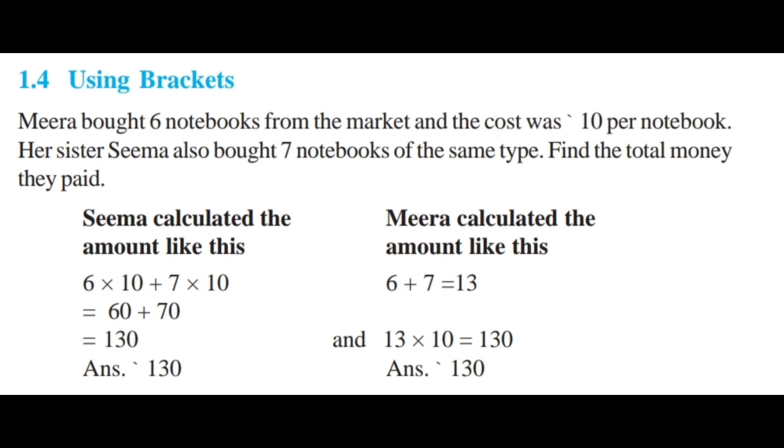Seema calculated the amount like this: 6 times 10 plus 7 times 10. So six tens is 60 plus seven tens is 70, which equals 130. Meera calculated the amount like this: 6 plus 7 equals 13. Thirteen books each cost 10 rupees, so 13 times 10 equals 130. The answer is the same in both ways.